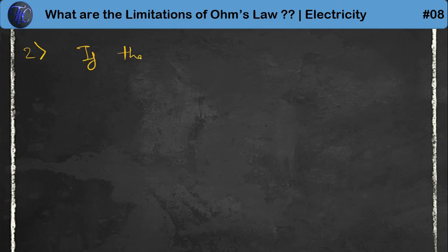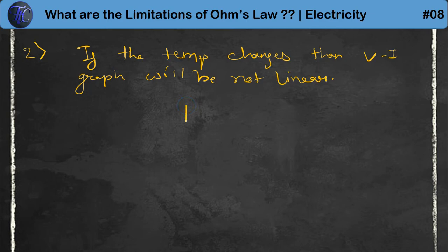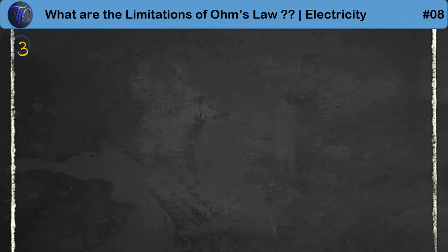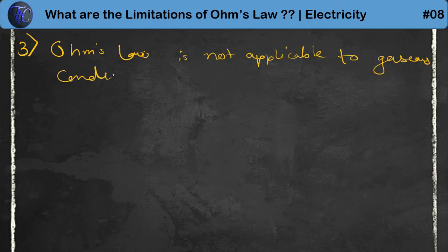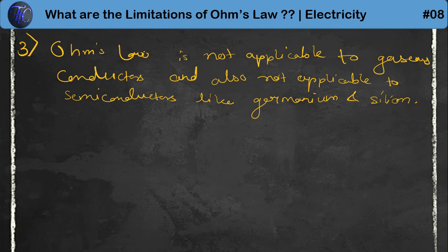Second limitation: if the temperature changes, then the V versus I graph will not be linear. Those materials are known as non-ohmic materials and their graph is non-linear. Third limitation: Ohm's Law is not applicable to gaseous conductors, and also not applicable to semiconductors like germanium and silicon. These materials are also known as non-ohmic materials.